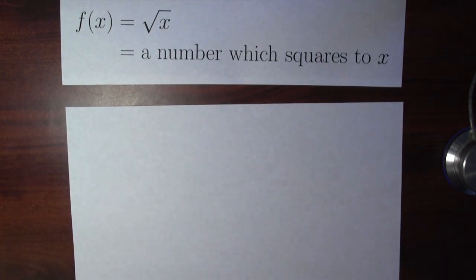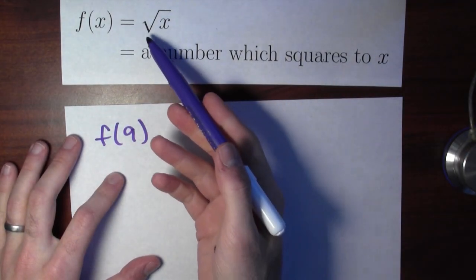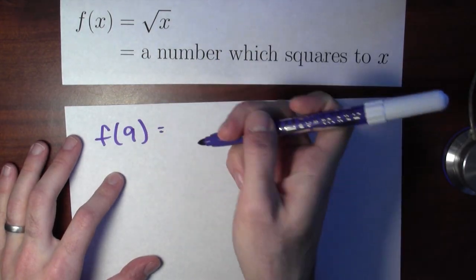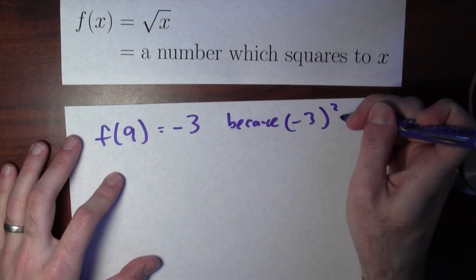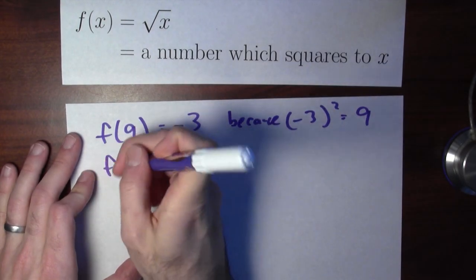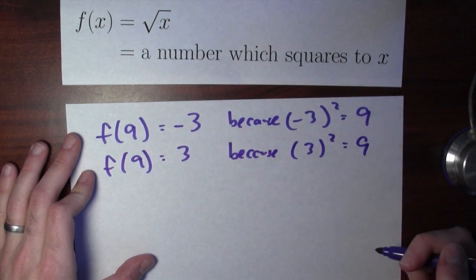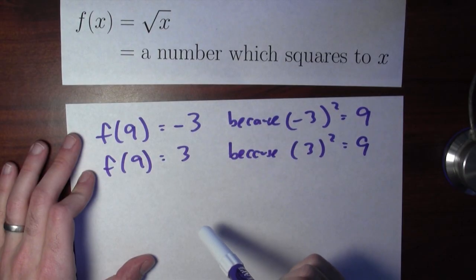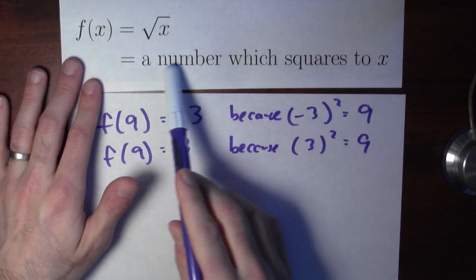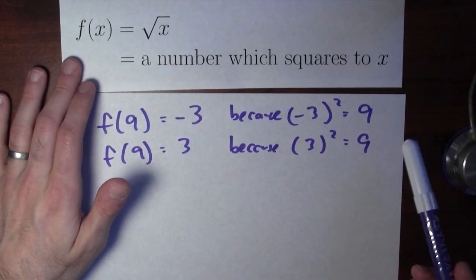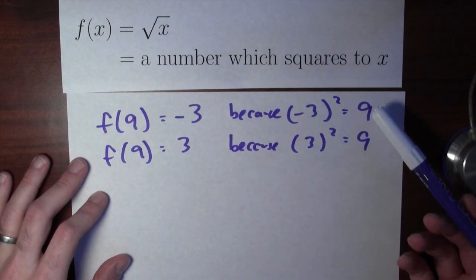There's a problem with this, though. Take a look at, say, f of 9. What would f of 9 be? Well, if you're thinking the square root of x is a number which squares to x, then you might think that f of 9 would be minus 3, because minus 3 squared is 9. But then you might also think that f of 9 should be 3, because 3 squared is also 9. Both of those numbers square to 9.